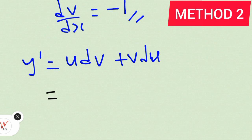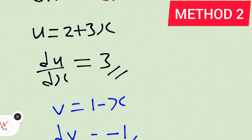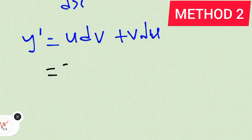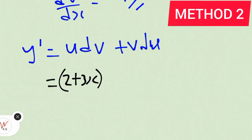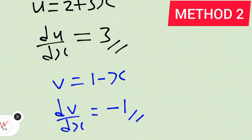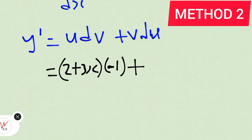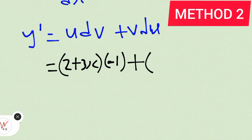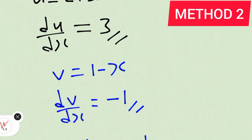What is our u? 2 + 3x. Then dv? dv is minus 1. Then plus v. Our v is 1 - x. Then du/dx is 3.